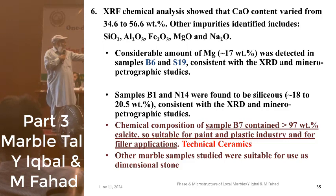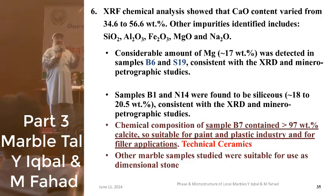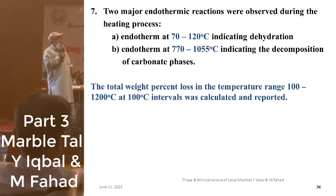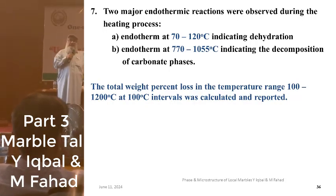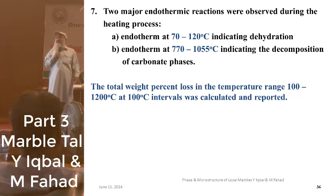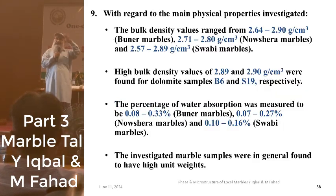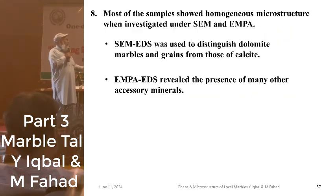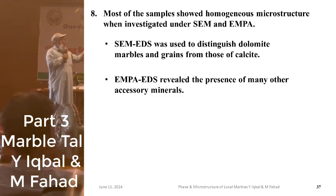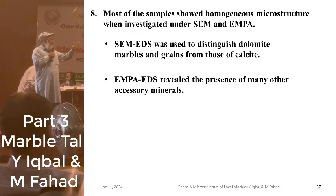Based on chemical composition, some samples are suitable for technical ceramics and others for dimensional stone. Two major endothermic reactions occur: 70 to 120°C, which is dehydration, and 700 to 1055°C, which is the decomposition of calcite or dolomite into the relevant compounds.